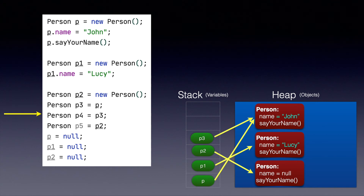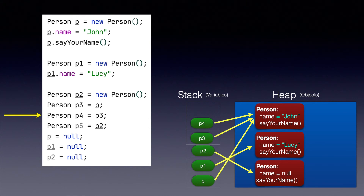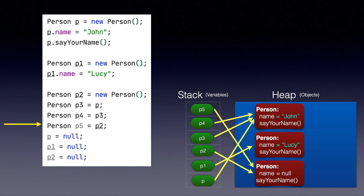Moving on to the next line — we create a new variable p4, and p4 is pointing to the object which is being pointed by p3. In the diagram, it looks like this. And then we create another variable p5, and we are assigning p2's object to it. This is how the diagram looks until this point in the program.